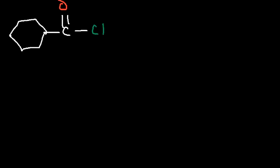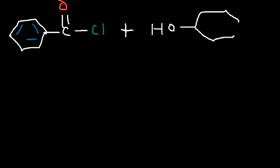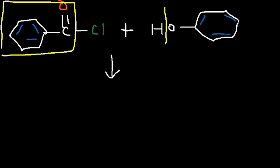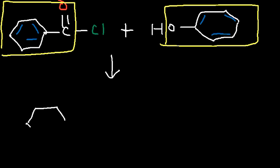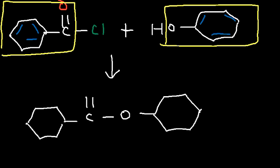Let's try one more example. Go ahead and draw the major product for this reaction. So let's take away HCl, and then connect this part of the molecule with this portion. We're going to get phenyl benzoate — another type of ester. That's how you can quickly predict the major product of an acid chloride reacting with an alcohol.